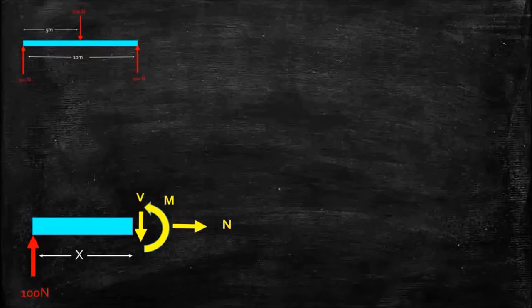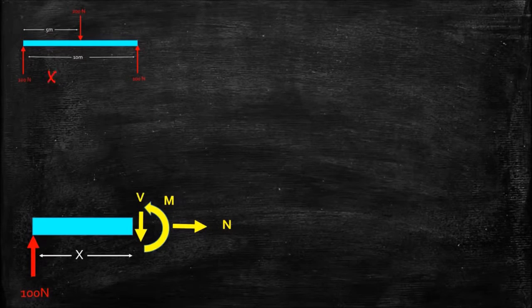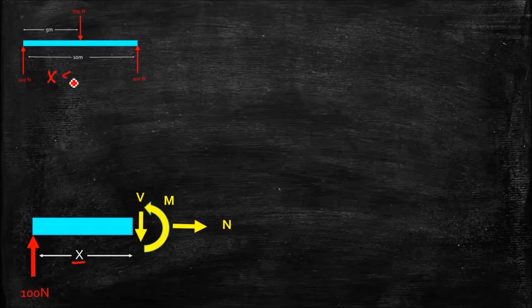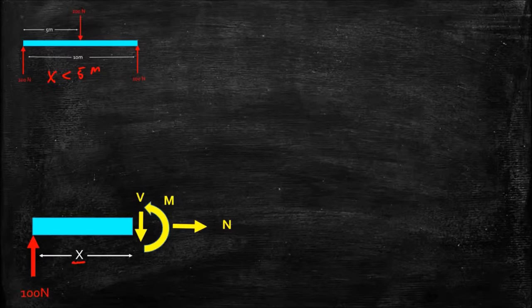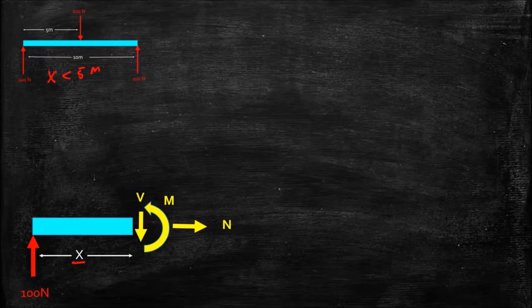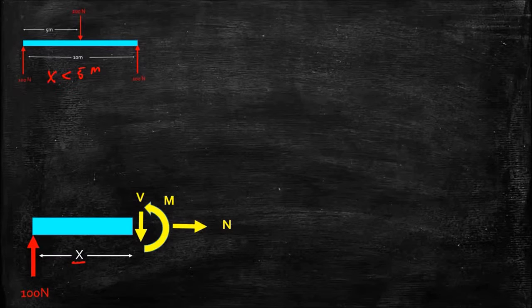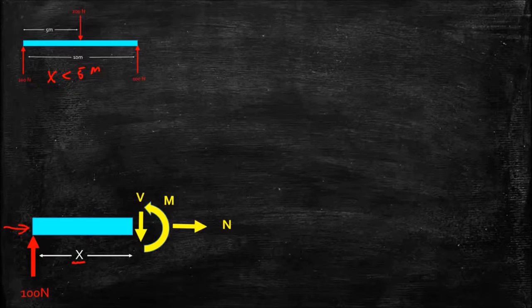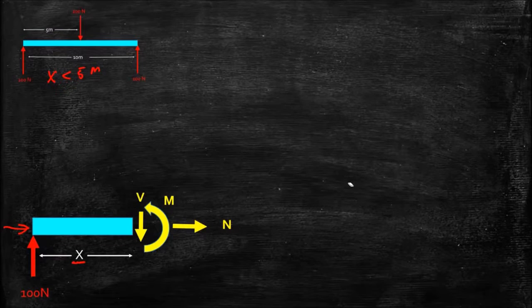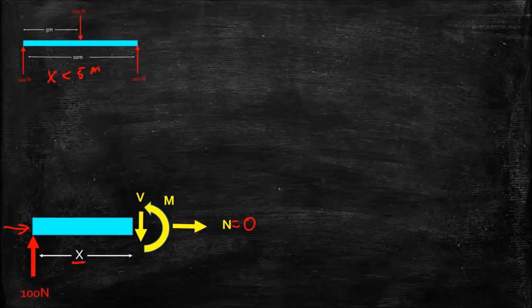Here we have a section of the beam to the left of the applied force, so x, this x right here is less than 5 meters. And we can find out what the forces are through our equations of equilibrium. So by inspection, I see there is no applied force in the x direction here. By inspection, I can determine that the normal force is equal to zero in this case.